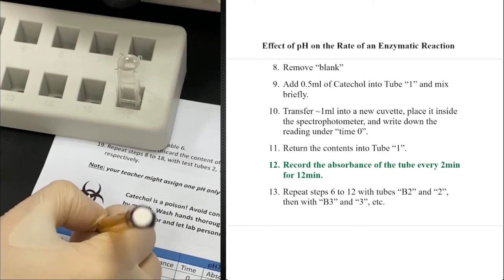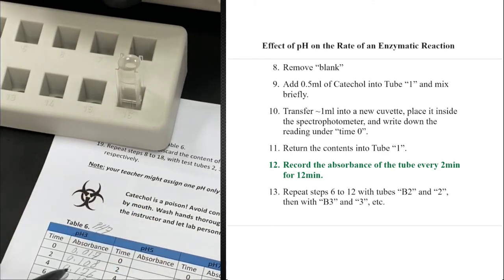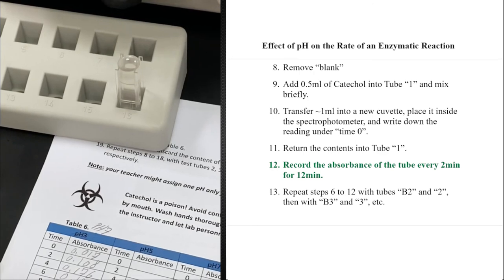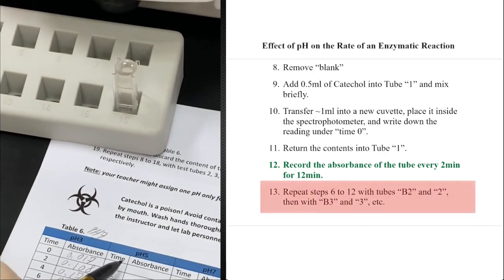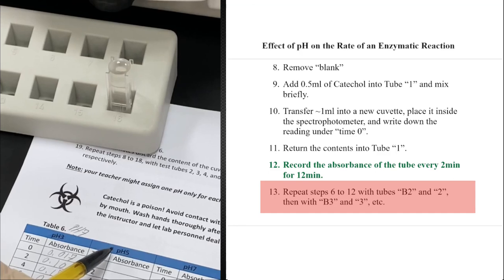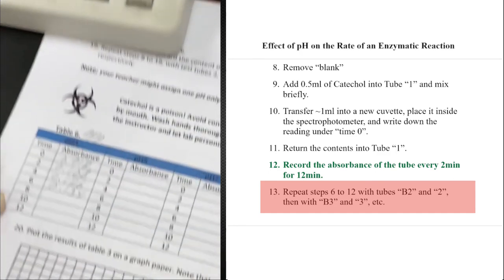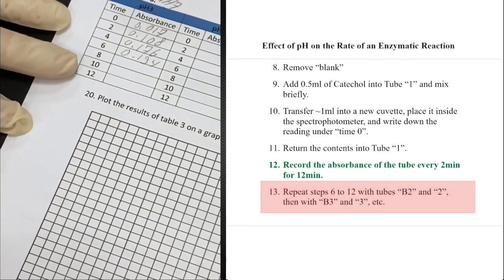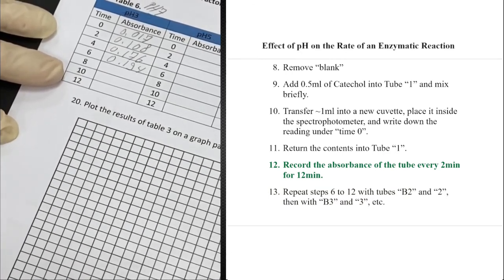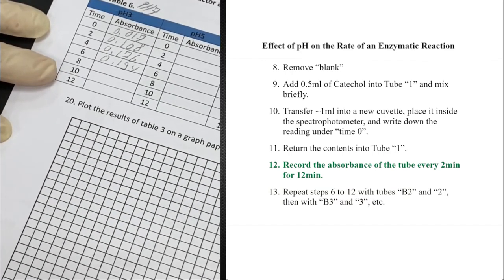And so on. You keep on taking a reading every two minutes. This is pH 7. So this was pH 7, one reading every two minutes until minute 12. We repeat the same procedure at pH 5, 3, 9, and 11. We plot them all on the same graph to compare the effect of pHs on the activity of catechol oxidase.